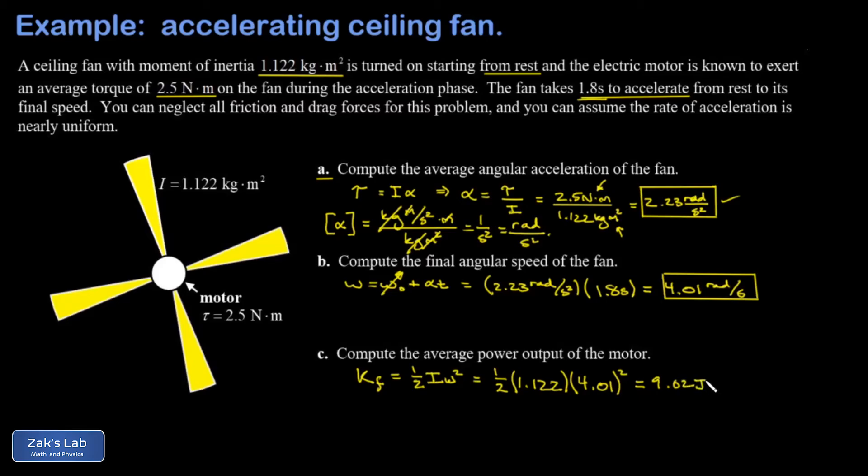Then my average power is just how much energy was transferred—in this case the motor is just pumping energy into the rotation of the fan so I'll just call this delta E—divided by how long it took, delta t. And that comes out in joules per second, which we also call watts.